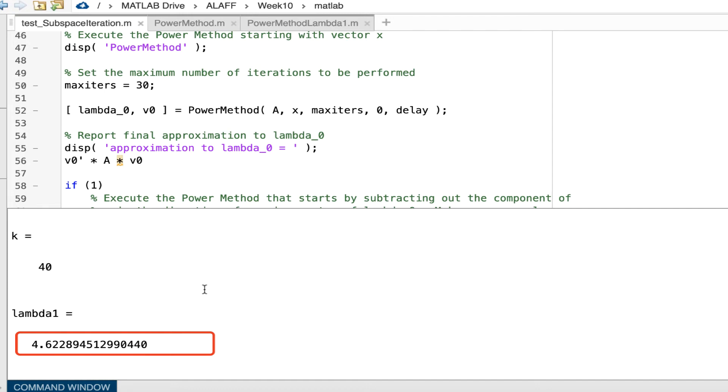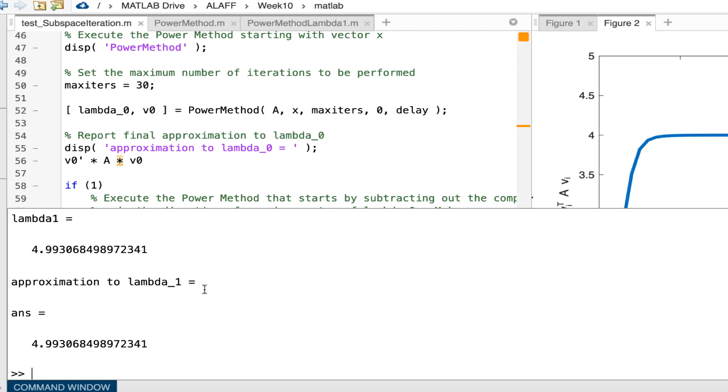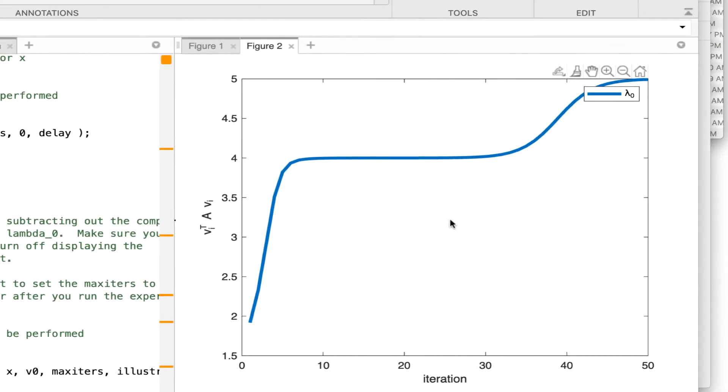And actually it's starting to home in on the eigenvalue equal to 5, the one that's largest in magnitude. And after 50 iterations, it completes this process. If we now look at the graph of what eigenvalue this method homed in on, we notice that for a while it does just fine and starts homing in on the eigenvalue equal to 4. But then apparently a little bit of error starts sneaking in in the direction of the eigenvector associated with lambda 0. And once that happens, that gets amplified over and over and over again. Eventually we again start pointing in the direction of the eigenvector associated with lambda 0.